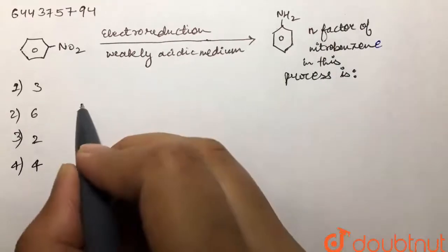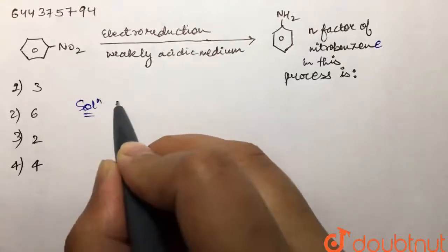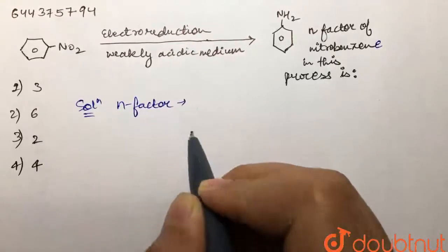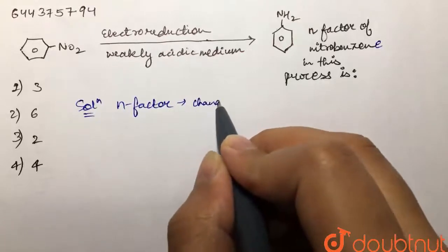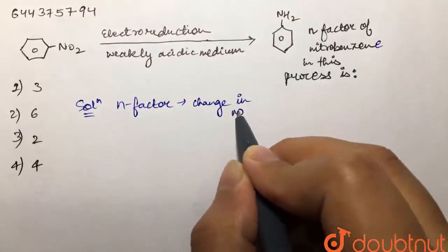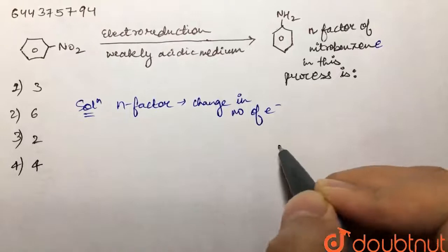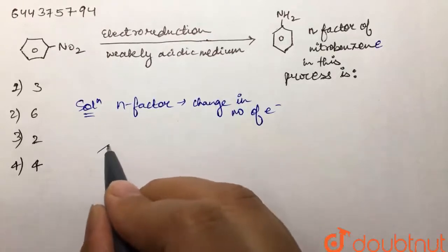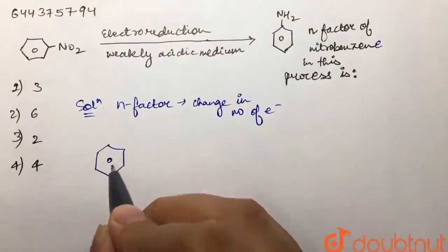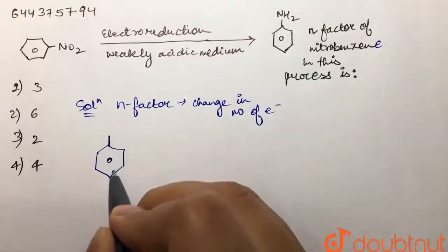So what is n-factor? N-factor is basically the change in number of electrons. So what we are going to do is find out the oxidation state of nitrogen in case of nitrobenzene and in case of aniline.